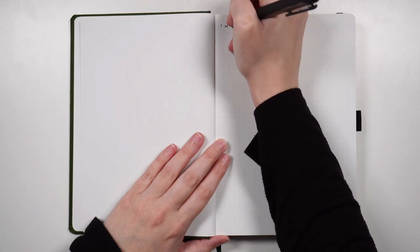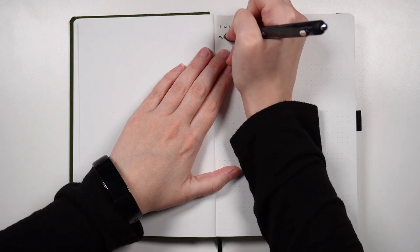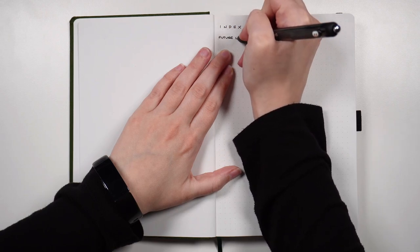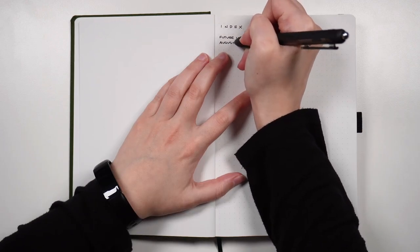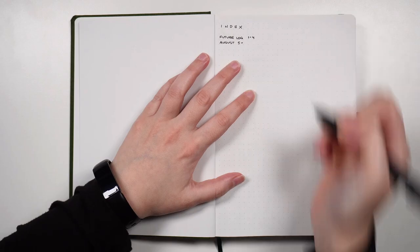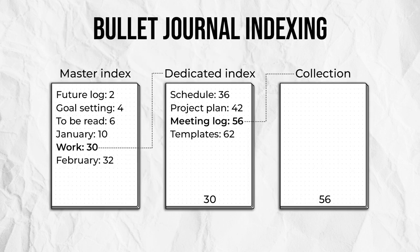The index, one of our core collections, is set up at the front of your journal. It captures the placement of other collections by recording the title and the page numbers where they're found. A dedicated index is an index layout that only captures collections related to a specific topic — for instance, work-related or home-related collections — and is used to make navigation easier, specifically to allow you to keep everything in one notebook.